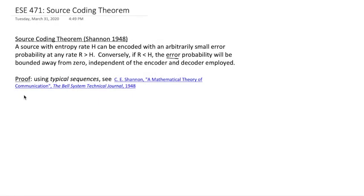I'm Neil Patwari. I'm going to talk about Shannon's source coding theorem. The theorem says that a source with entropy rate h can be encoded with arbitrarily small error probability at any rate r greater than h.